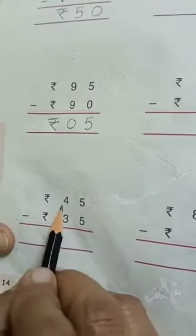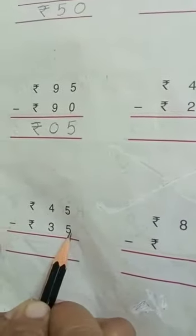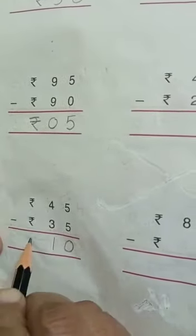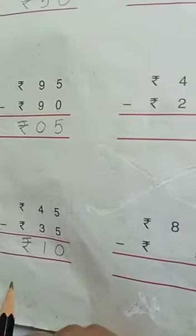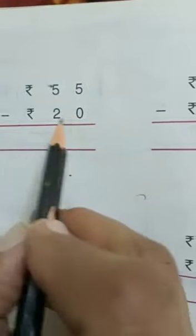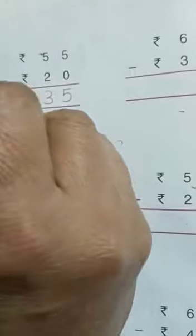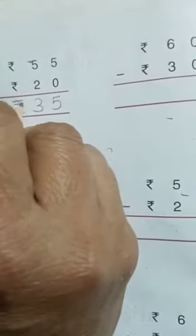Now next question: rupees 45 minus rupees 35. 5 minus 5 is 0. And 4 minus 3 is 1. Now 5 minus 0 — there is no line for 0, so 5 minus 0 is 5. And 5 minus 2: count 1, 2, 3, 4, 5, take away 2: 1, 2. How many numbers are left? 1, 2, 3. Answer is rupees 35.